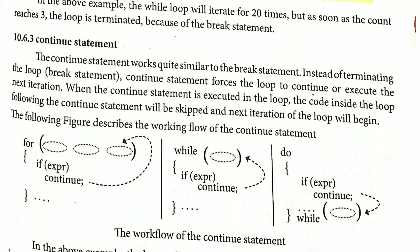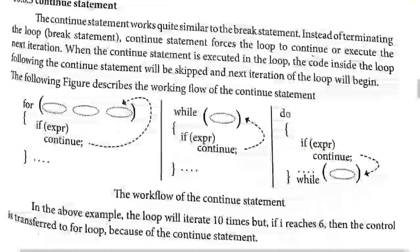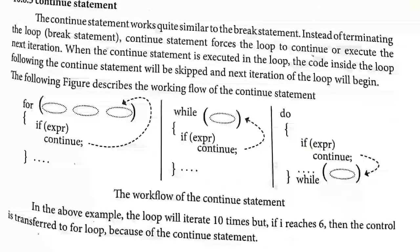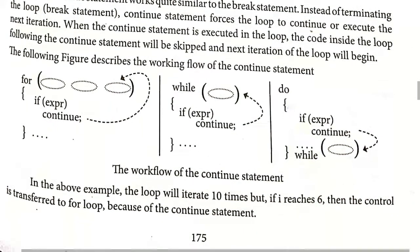When the compiler sees the continue statement, it transfers control from that particular statement to the beginning of the for loop. In the above example, the loop will iterate 10 times, but when it reaches 6 the control is transferred back to the beginning of the loop because the continue statement is executed.